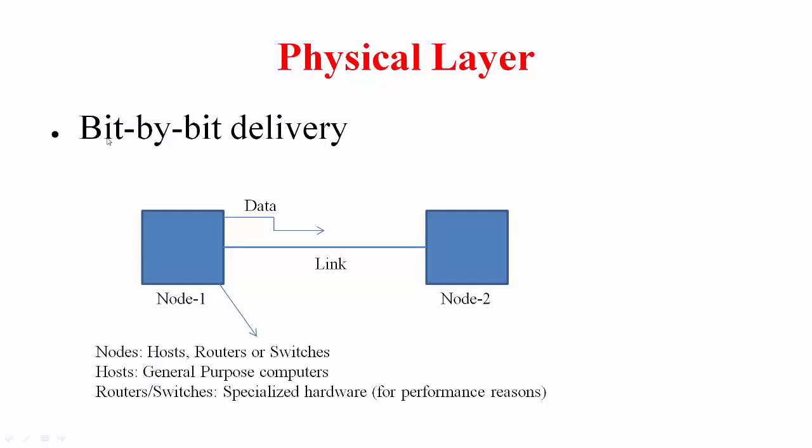The role of the physical layer is bit by bit delivery, as captured by this figure. We want to move data in the form of bits between two neighboring nodes over a link. These nodes could be hosts, routers, or switches.